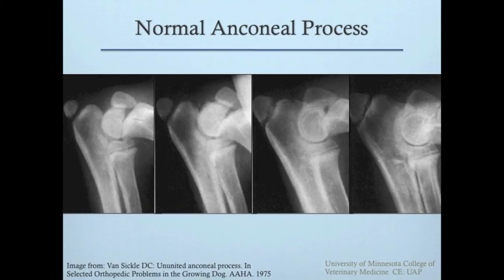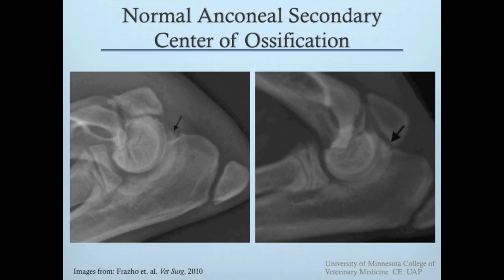When the elbow is extended, the anconeal process fits into the olecranon fossa of the humeral condyle. The anconeal process forms from a secondary center of ossification in some breeds of dogs. These secondary centers of ossification are usually quite small with a thin, poorly defined separation from the ulnar metaphysis. Secondary centers of ossification should be fused to the ulna by 24 weeks of age and tend to be much smaller than an ununited anconeal process fragment.